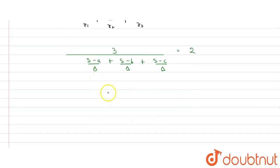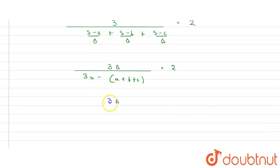Now let's simplify this further. It will be 3 delta in the numerator, and in denominator I will get 3s minus a plus b plus c, and this whole is equals to 2. Now 3 delta in the numerator, 3s minus a plus b plus c is what? 2s. So 3s minus 2s will be s, equals to 2.